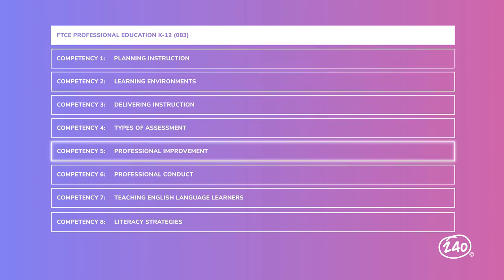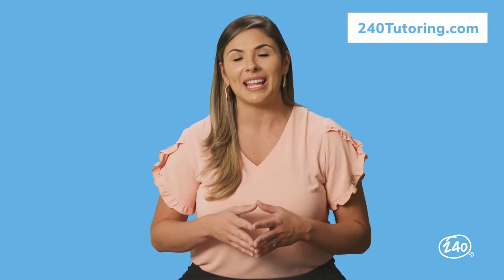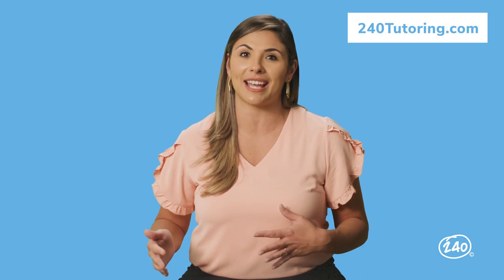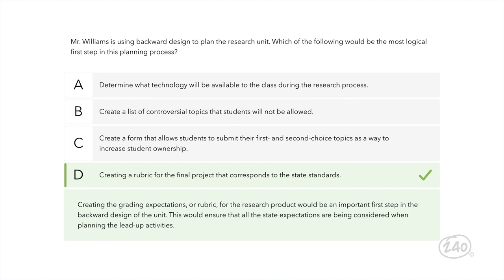Now that we've gone over some of the big concepts in our eight competencies, let's take a look at some practice questions. If you want a lot of practice questions, you can click the free practice test below — at the end you get a score report on how well you did. Mr. Williams is using backward design to plan a research unit. Which of the following would be the most logical first step in this planning process? The best choice is creating the grading expectations, or the rubric, for the research product — this ensures that all state expectations are considered when planning the lead-up activities.